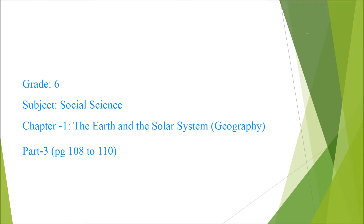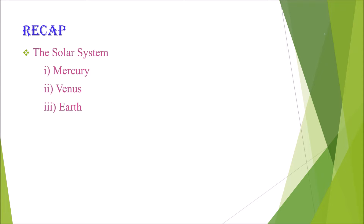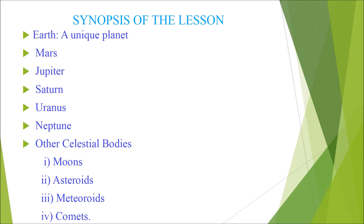Hello everyone. Today we are going to see the first chapter in geography, which is the Earth and the Solar System. We have already seen about the solar system, including Mercury, Venus, and Earth in part 2. In this session we are going to see the following topics: Earth a unique planet, Mars, Jupiter, Saturn, Uranus, and Neptune.